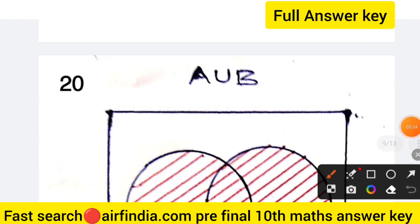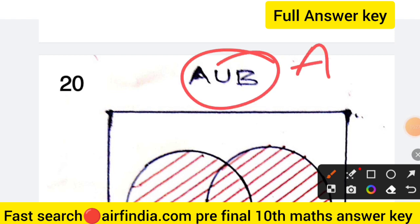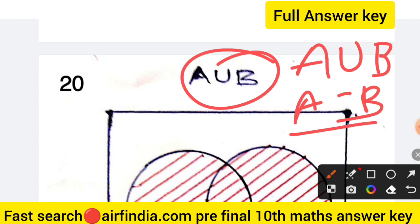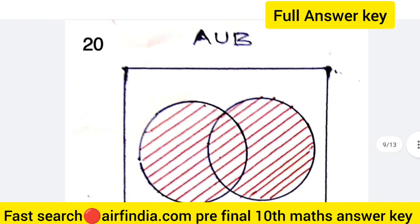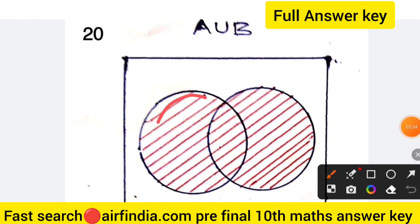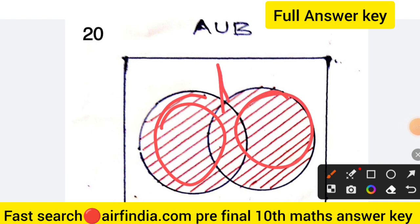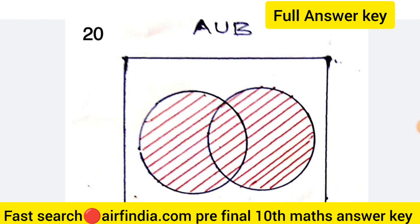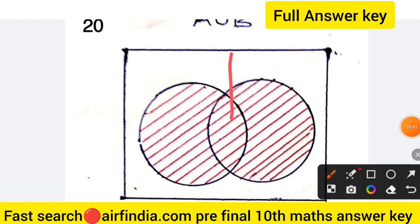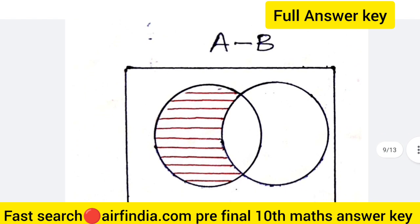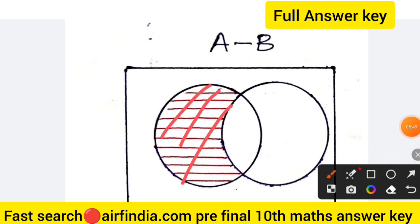Question 20: make the diagram of A union B and A minus B. For A union B, draw set A and set B together — that is A union B. For A minus B, draw set A and set B showing A minus B, which is the part of A that does not include B.